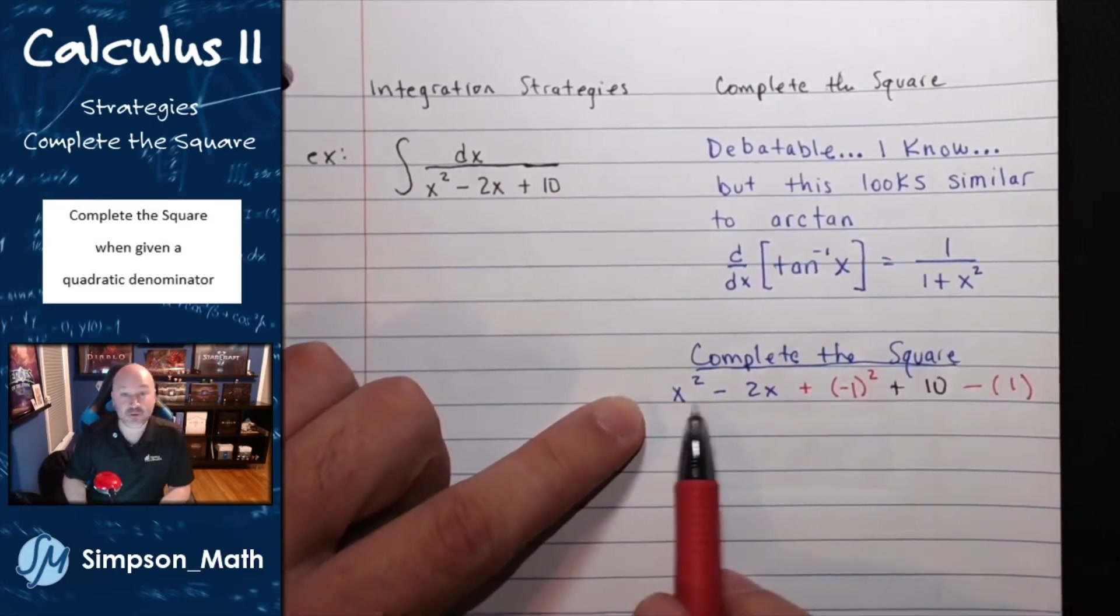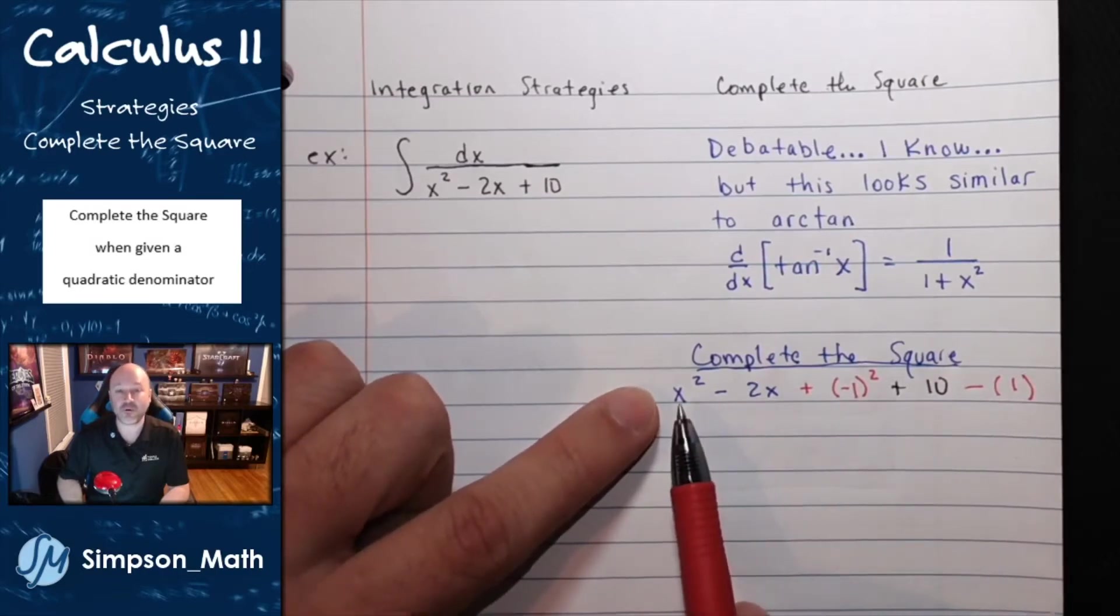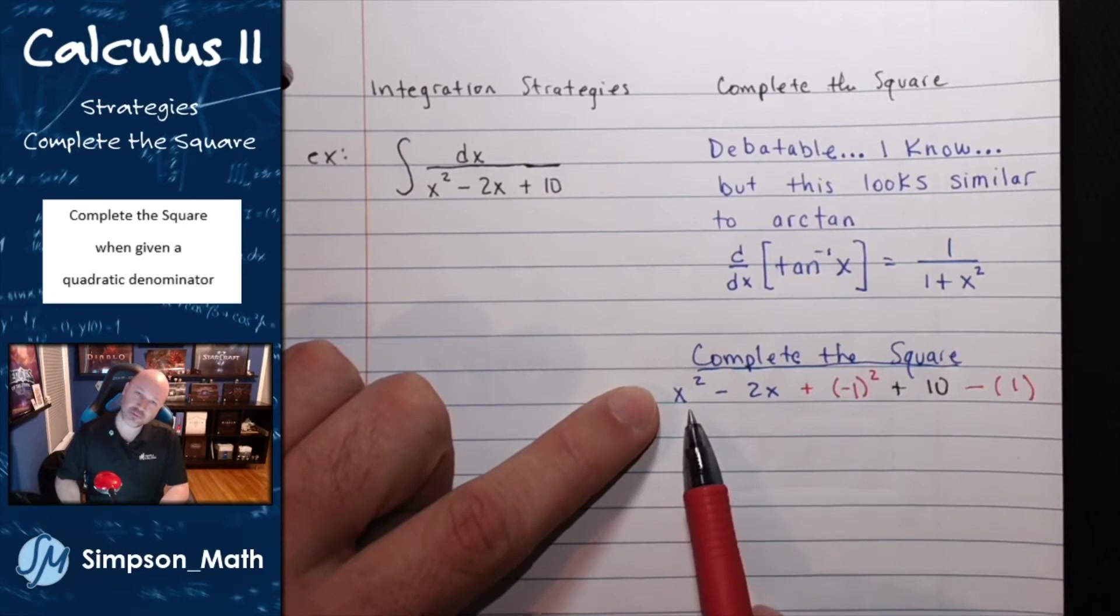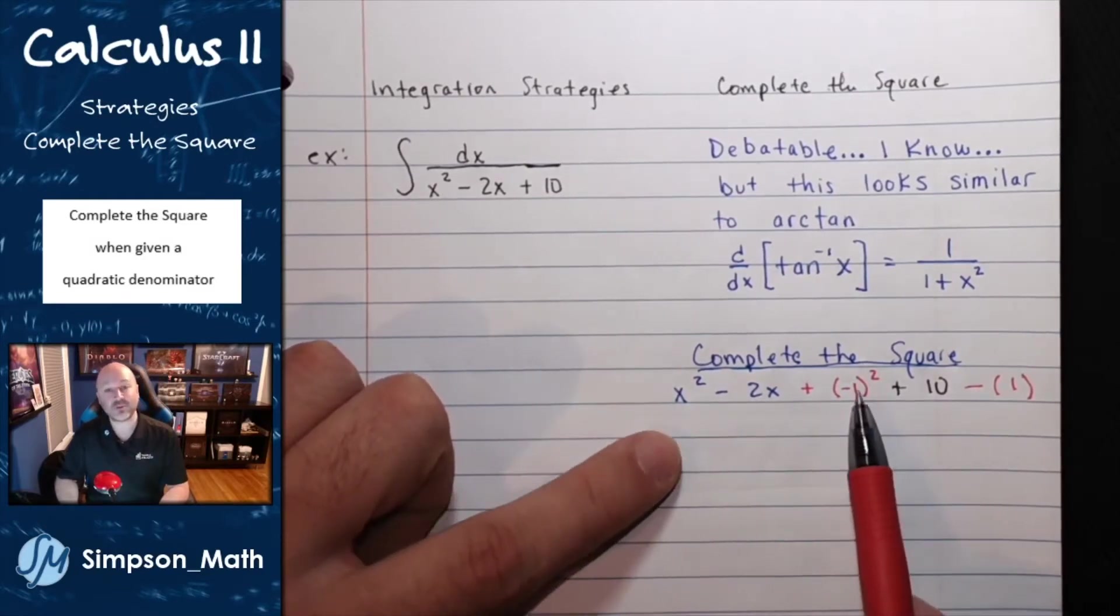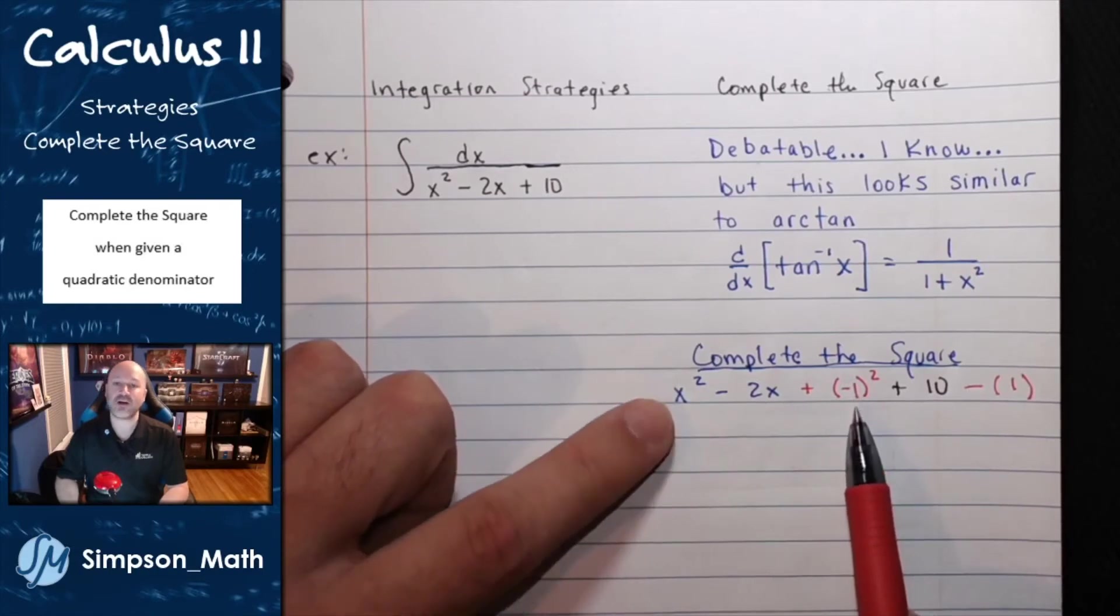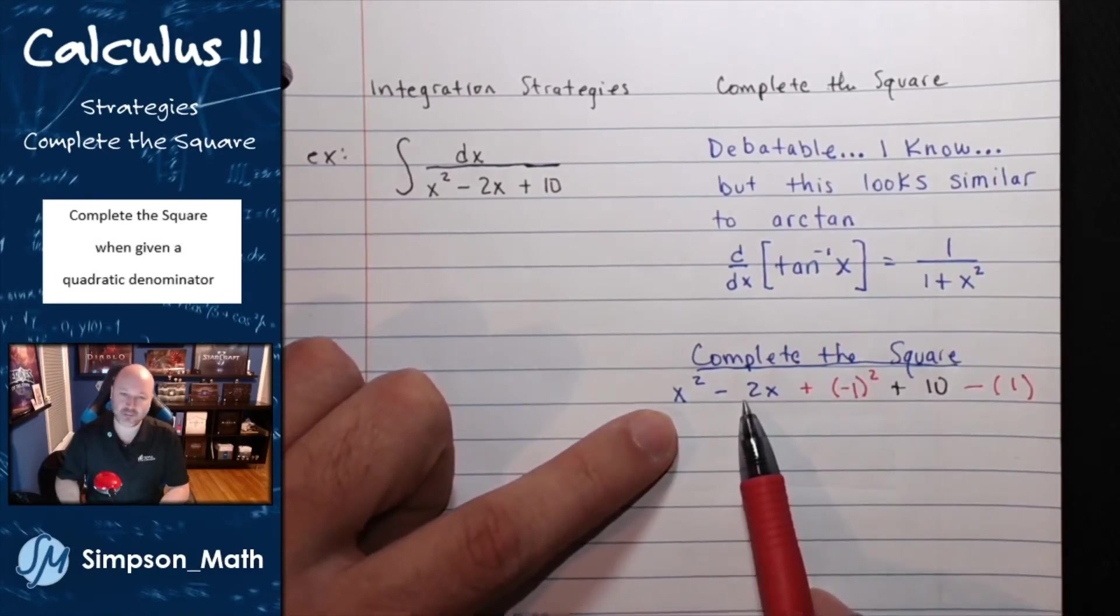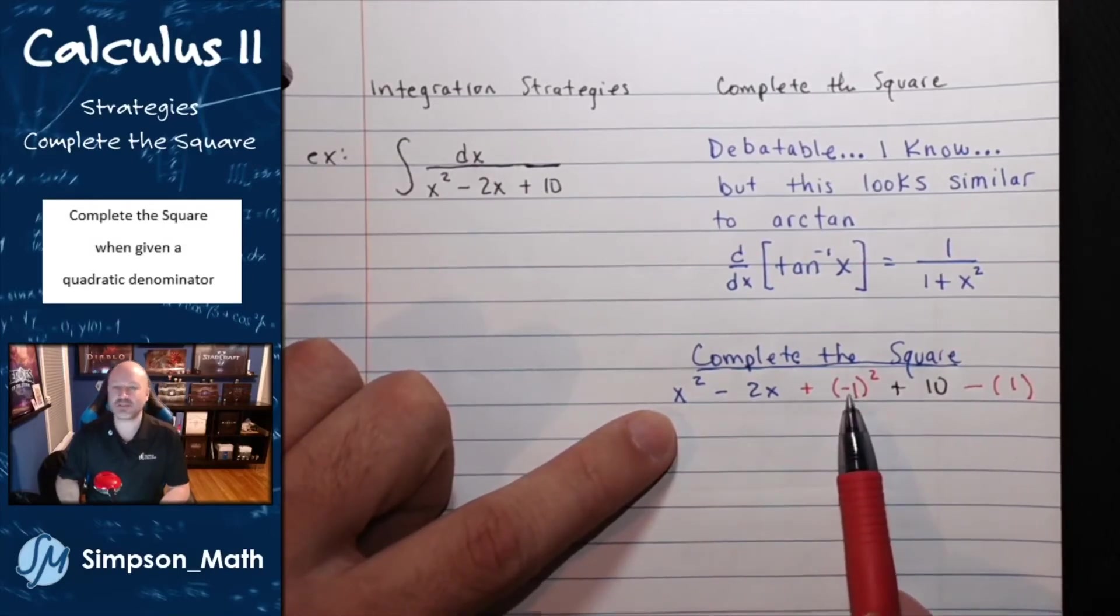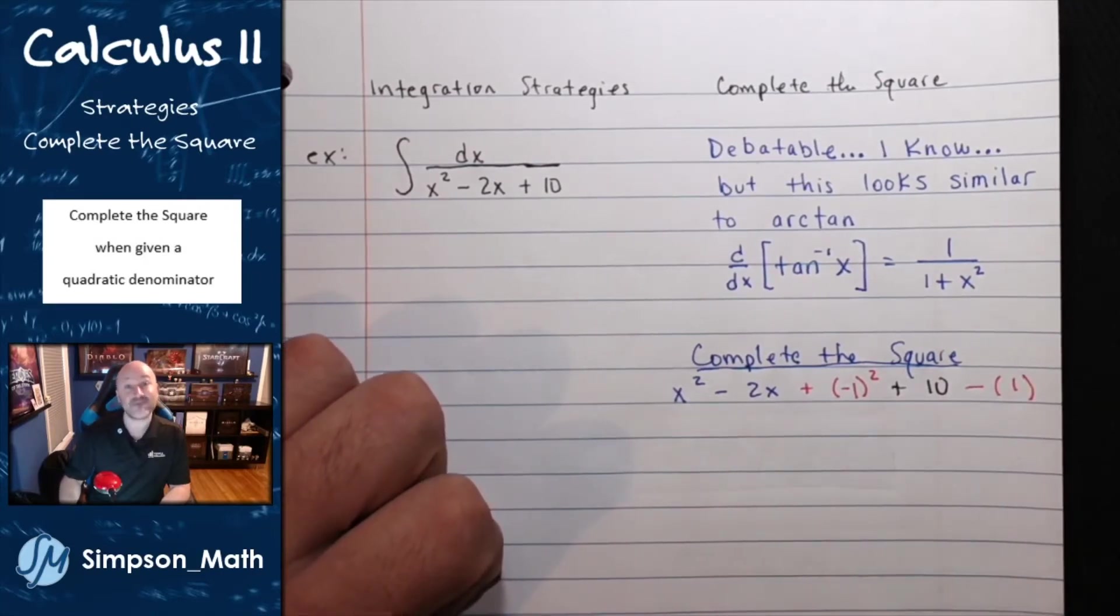Now, if we do that, then these first three terms make up a perfect square trinomial, where the first term is being squared, the last term is being squared, and if I were to double the product of these two bases, then that middle term happens to be that value, meaning x times negative 1 times 2 is a negative 2x. We call that a perfect square trinomial, and it factors nicely.